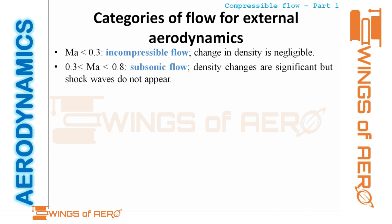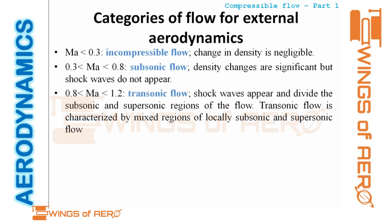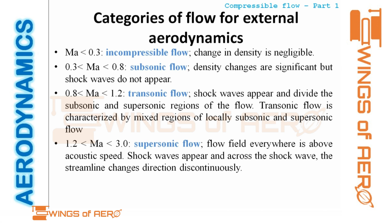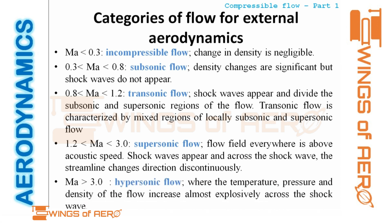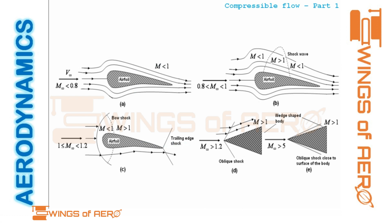The subsonic region falls under compressible flow. Next, Mach number from 0.8 to 1.2 is called transonic flow — purely compressible. Mach number from 1.2 to 3 is supersonic flow, where shock waves appear. Finally, hypersonic flow is where the Mach number is greater than 3 or beyond 5, where temperature, pressure, and density increase sharply across the shock wave.